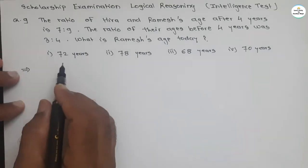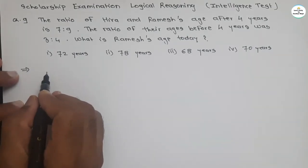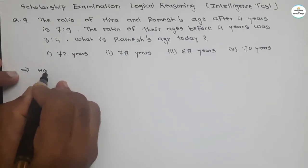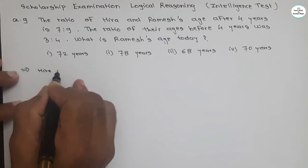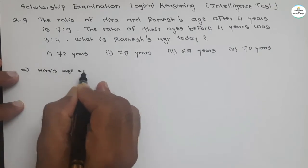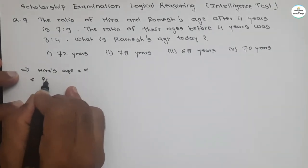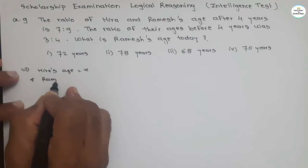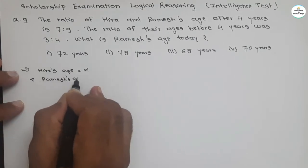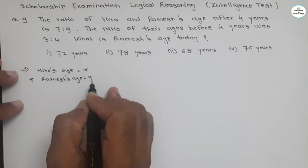In our solution, let's assume Hera's age as X and Ramesh's age as Y. These are our assumptions.